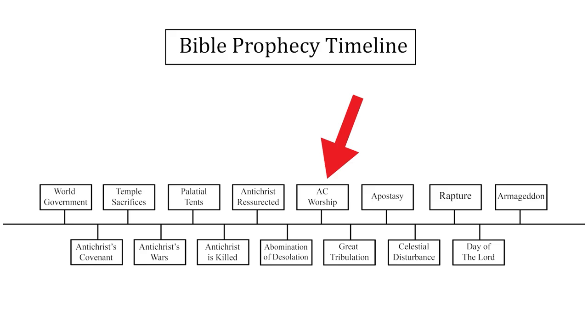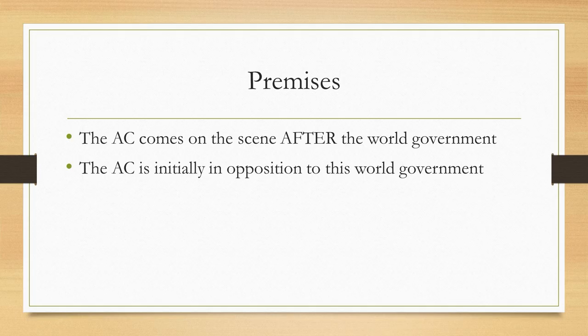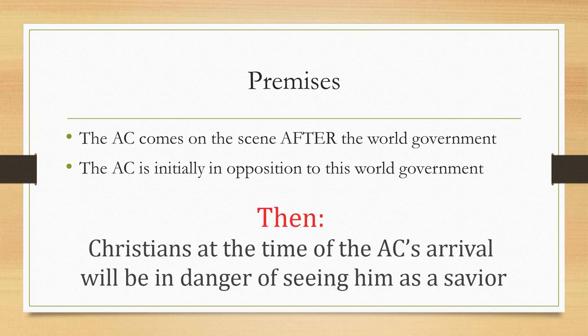If these two premises are true — namely that the Antichrist comes on the scene significantly after this oppressive world government is established, say 30 years after for the sake of argument, and that he will initially be in opposition to that ten-king coalition — then Christians who experience these events will be in danger of seeing the one who defeats this oppressive and evil empire, that is the Antichrist, as a kind of savior.